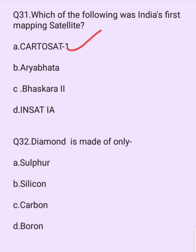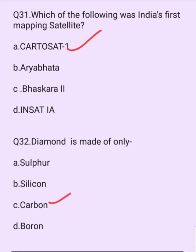Diamond is made of only which element? Options are: sulfur, silicon, carbon, boron. The answer is option C: carbon.